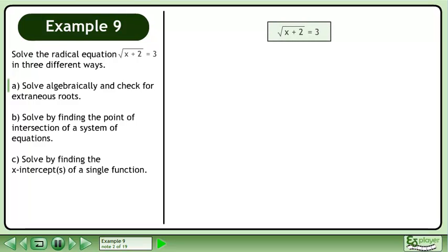We write the equation. Square both sides of the equation to get rid of the radical. This gives us x plus 2 equals 9.